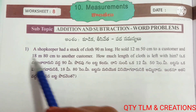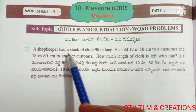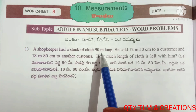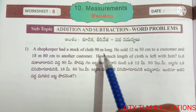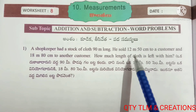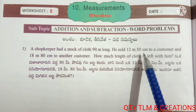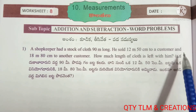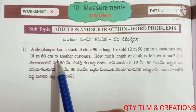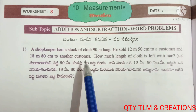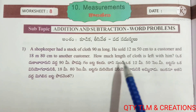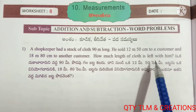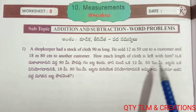First question: A shopkeeper had a stock of cloth 90 meters long. He sold 12 meters 50 centimeters to a customer and 18 meters 80 centimeters to another customer. How much length of cloth is left with him?